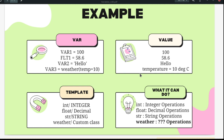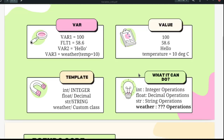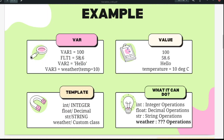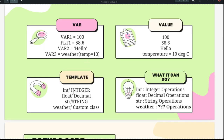In Python programming, when you start programming, we call templates 'classes'. At this moment, don't worry about that. Looking at the various templates these variables used: the first one was integer, the second was decimal, the third was string, and the fourth was a custom class.